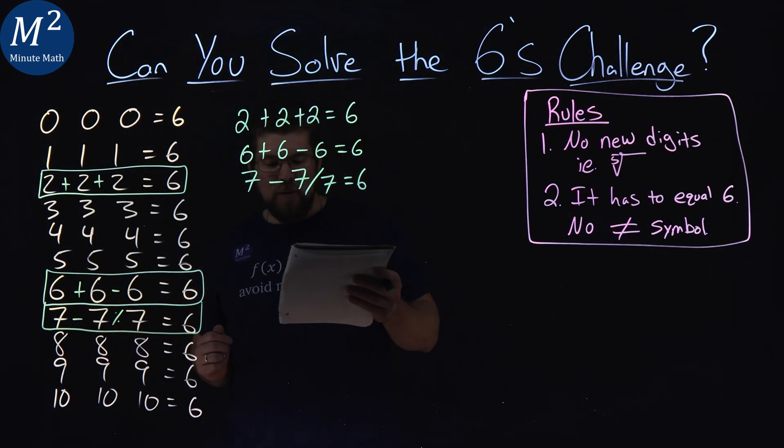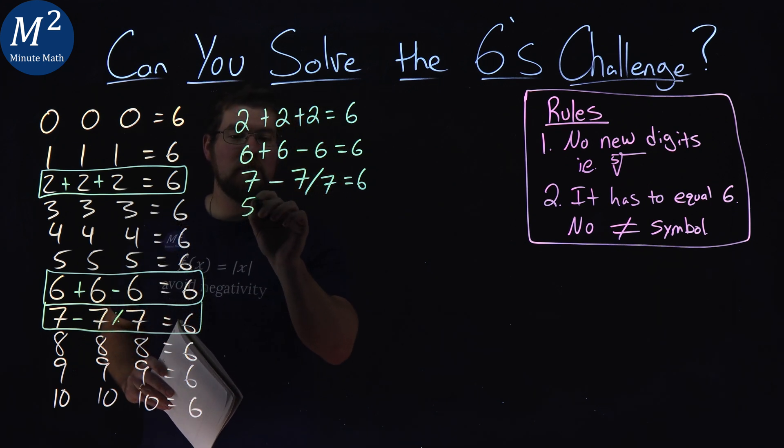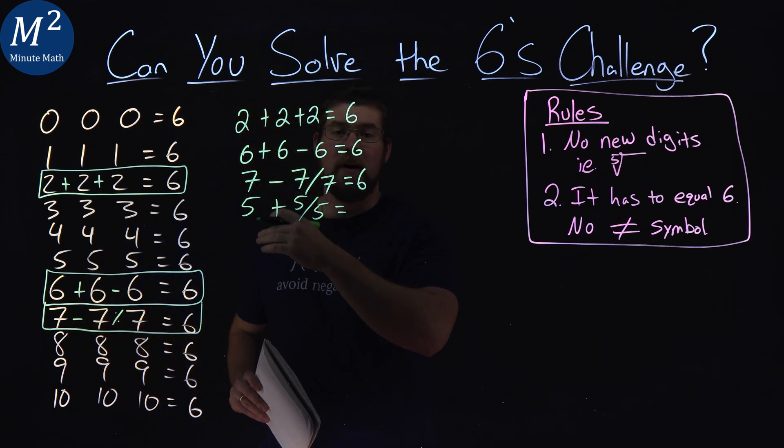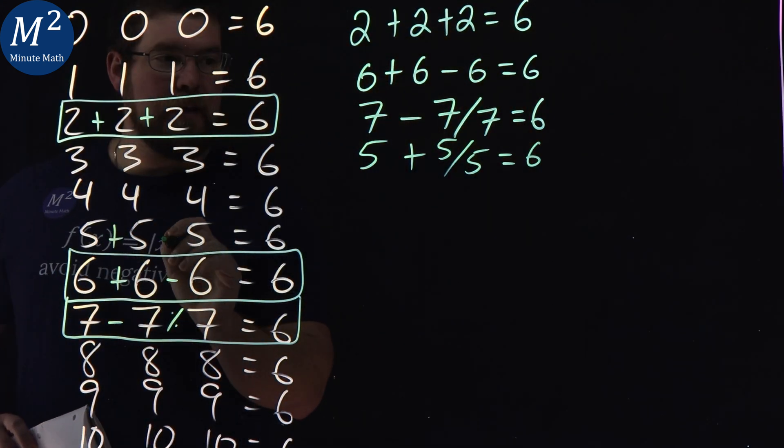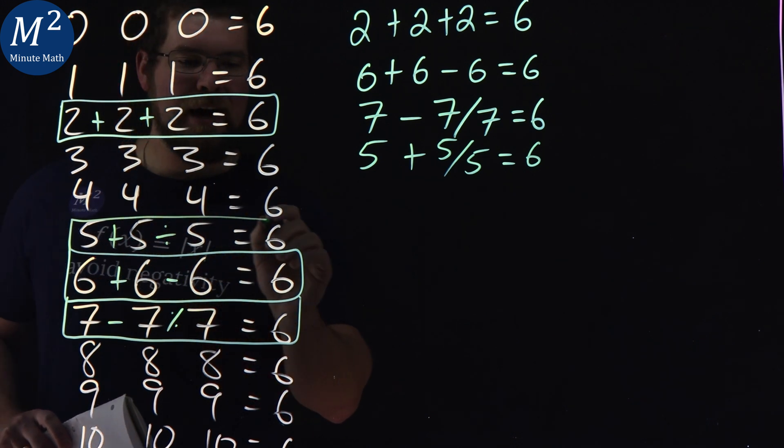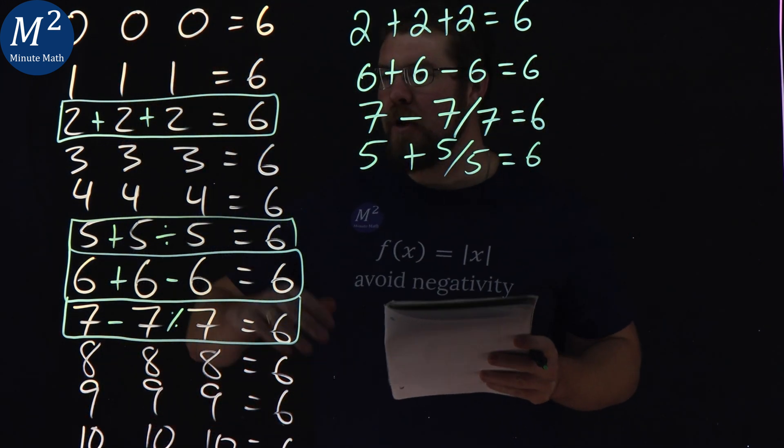Next one I saw was the fives, in a similar way to the sevens, but just five plus five divided by five. Five divided by five is one, plus five is good old six here. So we have plus and division symbol this way, and there we got it.